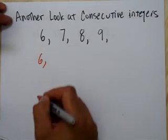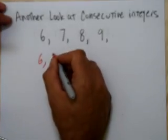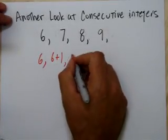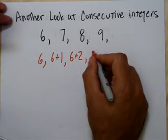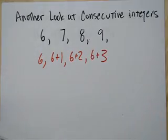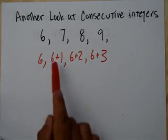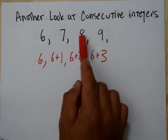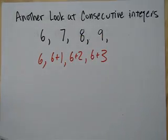Here's another look at consecutive integers. Look at this, 6, 7, 8, 9. I'm going to rewrite this as 6, 6 plus 1, 6 plus 2, 6 plus 3. Is that the same thing? Let's see. 6 plus 1 is 7, 6 plus 2 is 8, 6 plus 3 is 9.